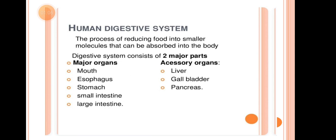The Major Organs are: Mouth, Esophagus, Stomach, Small Intestine, and Large Intestine. The food travels through these main organs — from the esophagus to the stomach, then the small intestine and large intestine.